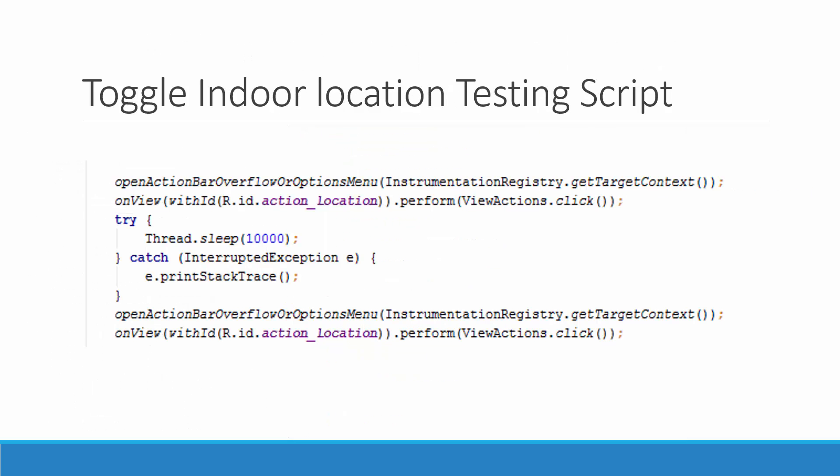Here is a small toggle indoor location testing strip made using Espresso. All it does is open the menu, toggle indoor location on, wait 10 seconds to see if everything initializes, and then toggle it back off to verify everything closes correctly.